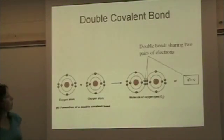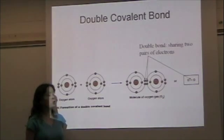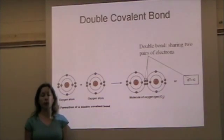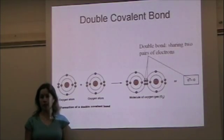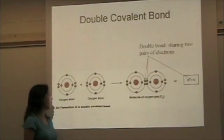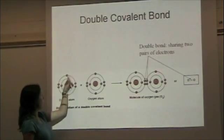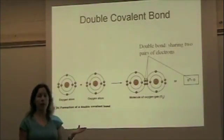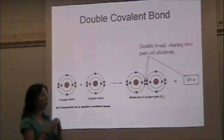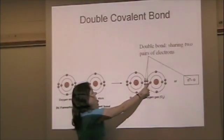In a double covalent bond, two pairs of electrons, or four electrons total, are shared. O2 gas is held together with a double covalent bond. Oxygen has six electrons in its outer shell and would rather have eight, so it can share four electrons as shown here.